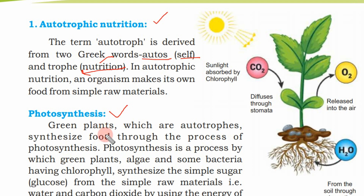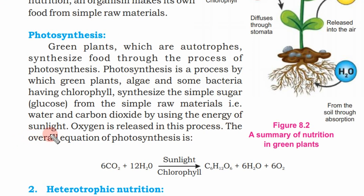Green plants, which are autotrophs, synthesize food through the process of photosynthesis. Photosynthesis is the process by which green plants, algae, and some bacteria that contain chlorophyll synthesize the simple sugar glucose from the simple raw materials water and carbon dioxide, using the energy of sunlight. Oxygen is released in the process.